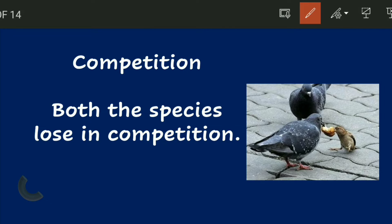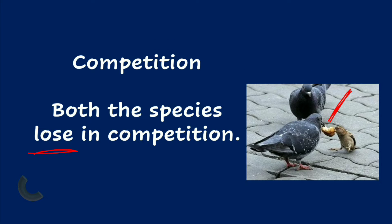Next is competition. What happens in competition? Both species lose. They lose because they are fighting for the same resources. As you can see in the diagram, when there is competition between different species over resources, neither gets enough — so both are harmed.